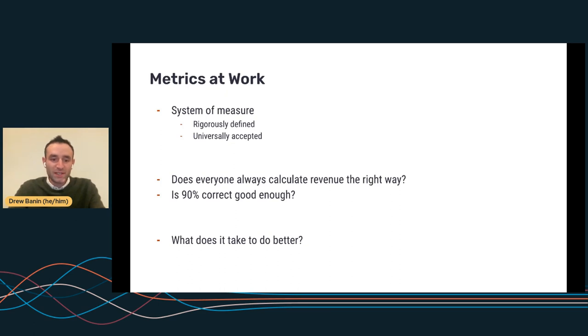And so remember that a good system of measure is both universally accepted and rigorously defined. And so the question is, does everyone always calculate revenue the right way? Is it inevitable that if you're making a chart with revenue on it, that you will do so correctly? How close is good enough? Like it's 90%. Okay. Do you want to get to 95%? What does it take to get to 100%?